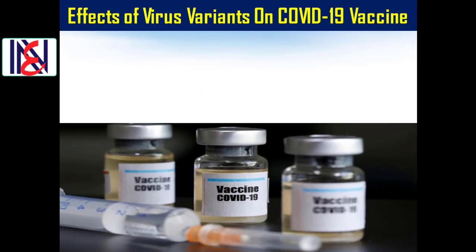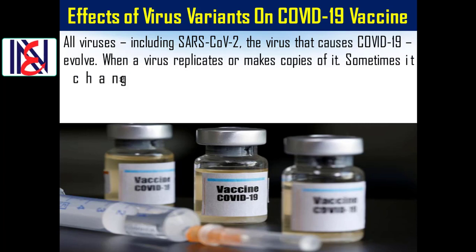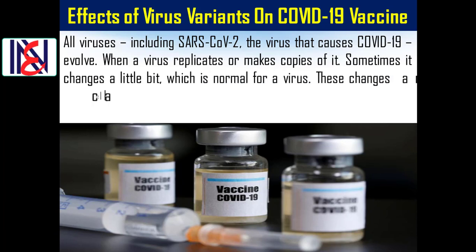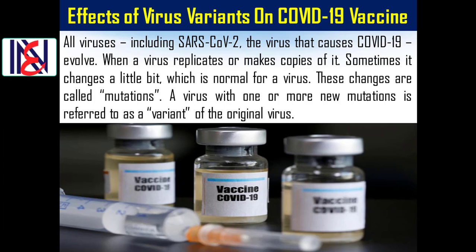Effects of Virus Variants on COVID-19 Vaccines. All viruses, including SARS-CoV-2, the virus that causes COVID-19, evolve. When a virus replicates or makes copies of itself, sometimes it changes a little bit, which is normal for a virus. These changes are called mutations. A virus with one or more new mutations is referred to as a variant of the original virus.